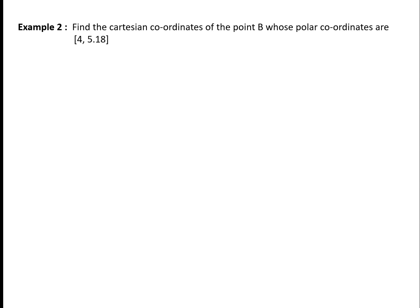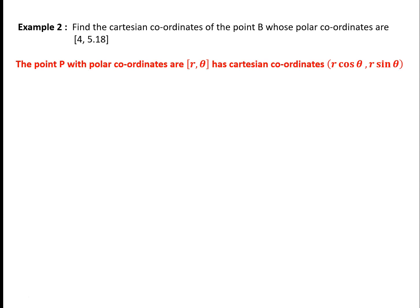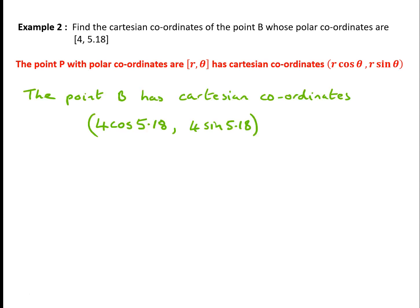To find the Cartesian coordinates of point B whose polar coordinates are [4, 5.18], we use the result just introduced: B has Cartesian coordinates (4 cos 5.18, 4 sin 5.18), which gives approximately (1.803, −3.571).